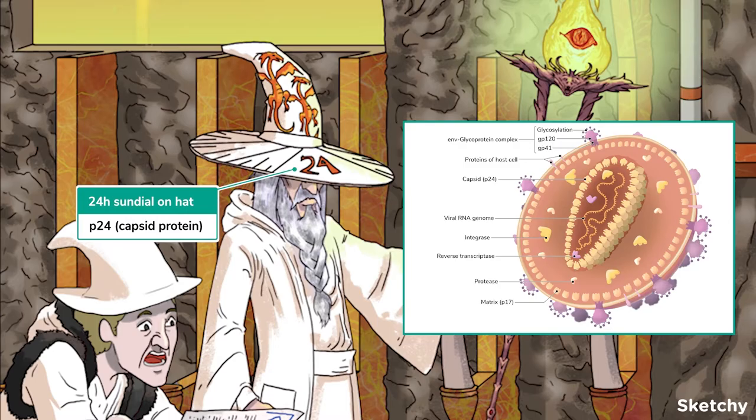Before we move on, a little disclaimer. We're going to be talking about a lot of different proteins, all with letters in front of numbers: GP120, GP41, P24, and so on. Unfortunately, the structure of HIV is something that is often tested. Normally, these are exceptionally tedious to try to remember, but luckily you have Sketchy, and this kind of stuff is our bread and butter. So don't worry — we'll make this memorable for you.